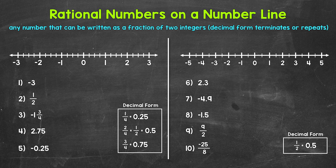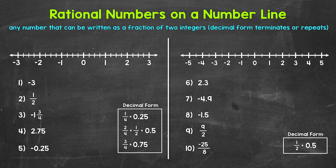Before we jump into number one, we need to figure out how this number line is presented. The lowest number shown is negative three, and the highest is positive three. In between each number, the number line is split into four sections — fourths. So if we look at zero and go right, we have one fourth, two fourths (which is one half), three fourths, one, one and one fourth, one and a half, one and three fourths, two, and so on. Going left from zero: negative one fourth, negative two fourths (negative one half), negative three fourths, negative one and one fourth, negative one and a half, negative one and three fourths, negative two, and so on.